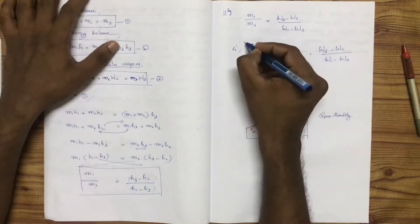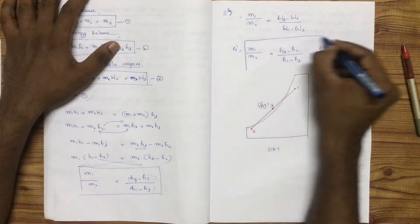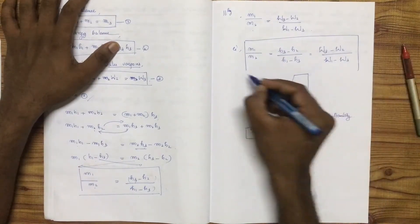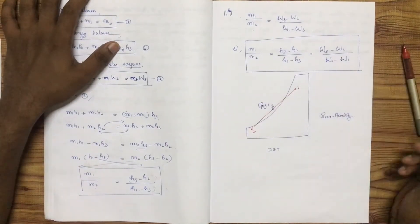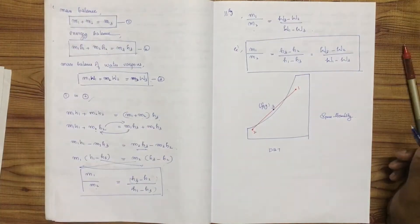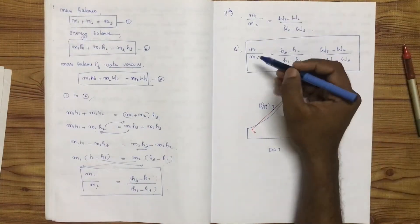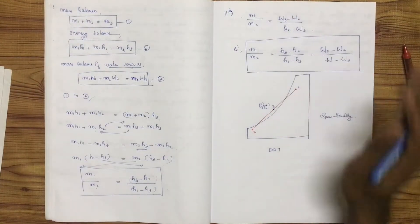In terms of enthalpy and specific humidity differences, we can represent the mass ratios: M1 by M2 equals the ratio of enthalpy and humidity differences between the states.